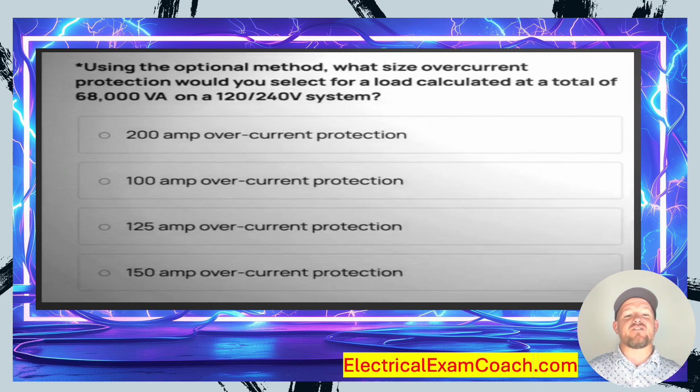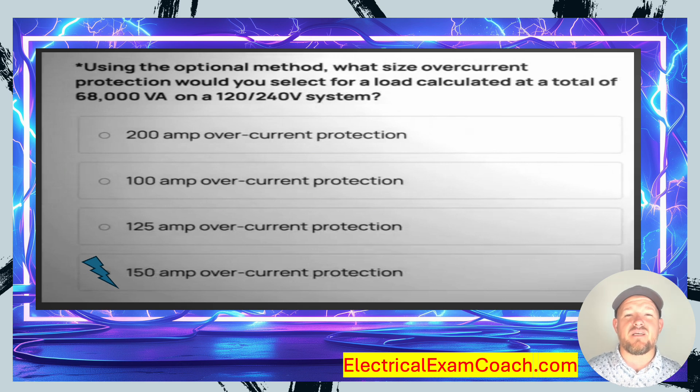The correct answer is D — a 150 amp OCPD. Let's take a look at why.